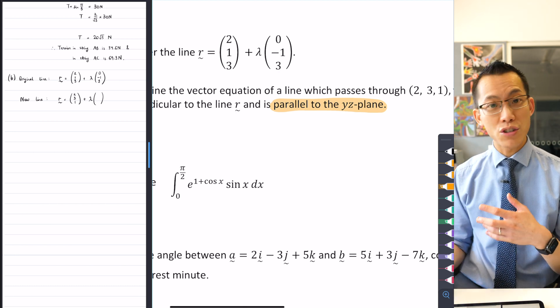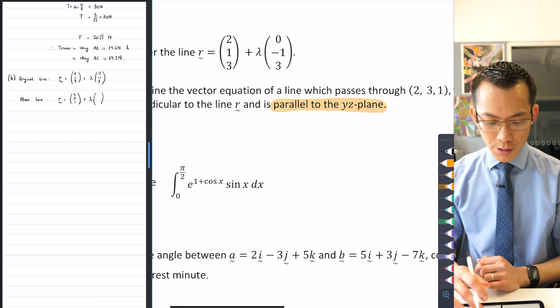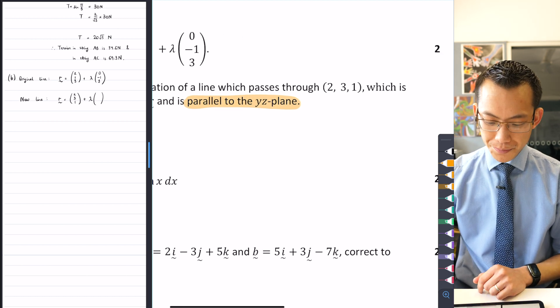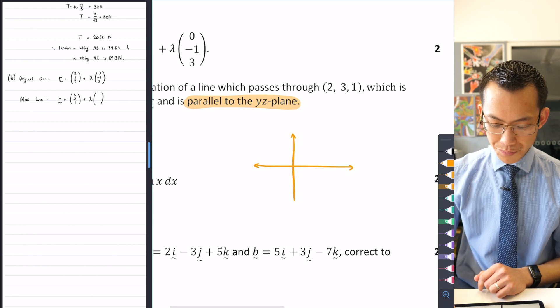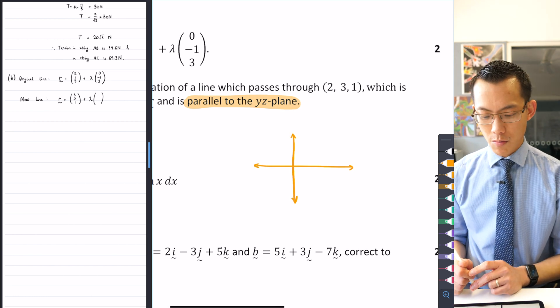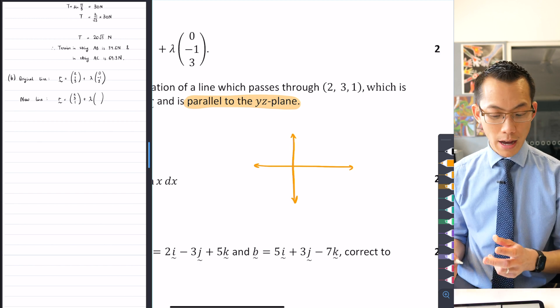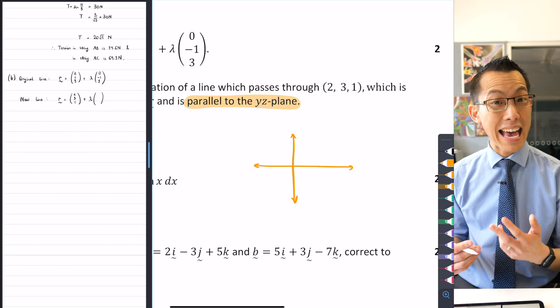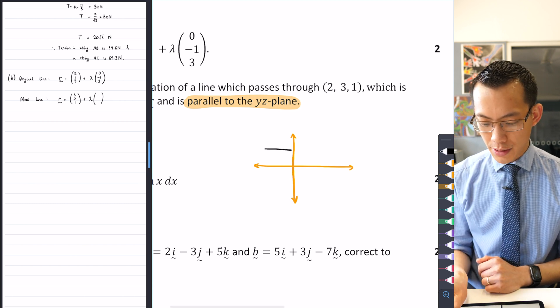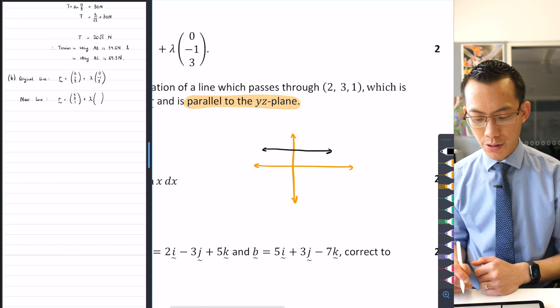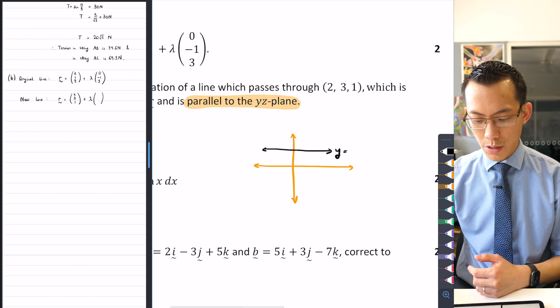Let me say that again. If you're parallel to the YZ plane, your X component has to be 0. An easy way to compare that is just to think back to two dimensions. So if I were to draw for you, here is our good old Cartesian plane, and I said to you, oh, okay, what does an equation that is, or a line rather, that's parallel to the X axis, what does it look like?